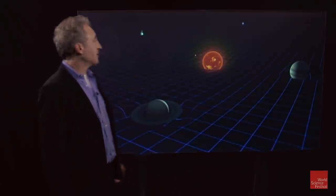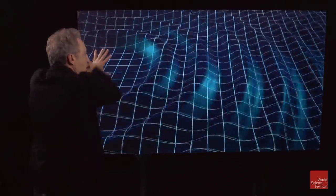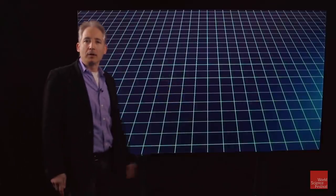And that would mean that if something were to jostle the fabric of space-time, it should send out ripples in the fabric of space, and it's those ripples that we now call gravitational waves.